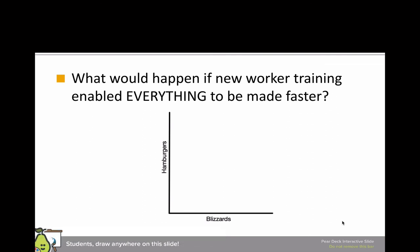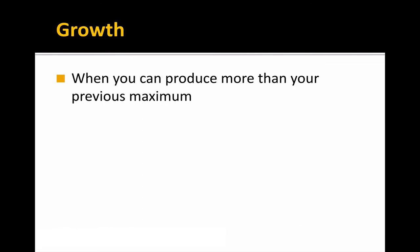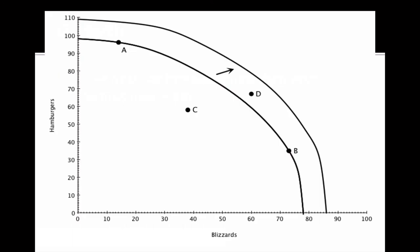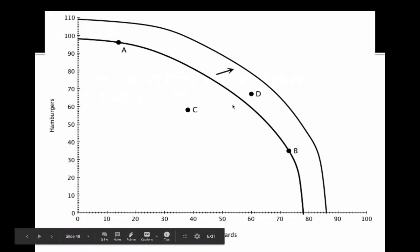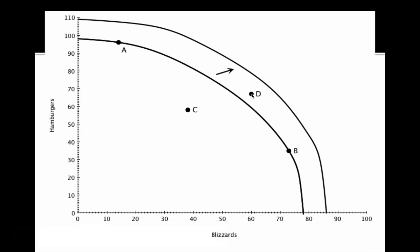If we go back to our old PPC and we had new worker training that enabled everything to be made faster, then we would see growth on both sides of the PPC. Growth on a PPC is when you can produce more than your previous maximum, and that would look like a whole new line on the graph. So if we had new worker training, we could handle this and we would have growth.